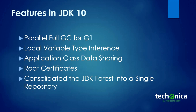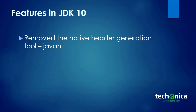The next feature is consolidating the JDK forest into a single repository. In JDK 9 there were eight repositories used for JDK code, broken into mini Mercurial repositories: the root, corba, hotspot, Java API for XML processing, Java API for XML web services, JDK, lang tools, and Nashorn the JavaScript engine. Even though multiple repositories offer some advantages, they do a poor job supporting various desirable source code management operations. So now these eight repositories have been combined into a single repository.